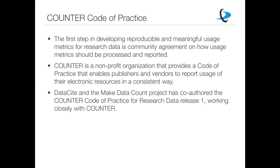Earlier this year we released version 1 of this Code of Practice for Research Data, and you can find it on the COUNTER website. We need a standard way to count usage for data because it is different from counting for text documents. The differences include: no need to track access by institutions as most research data is openly available; granularity differences since datasets frequently include individual files that can be aggregated, merged, or split; and versioning differences since research data frequently has many versions, which is something you don't have with publications.